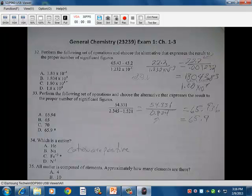33, we have the 54.331 divided by the 2.345 minus the 1.521. Both numbers are in the bottom. When you subtract them, they're both accurate down to the thousandths. And so then your answer can be then in the thousandths as well, 0.824. That has three significant figures. With a 54.331 has five significant figures. So the answer, when it's all said and done, can only have three significant figures. So the 65.936 has to be then rounded to 65.9 for the three significant figures. D being the answer.